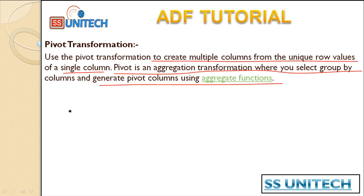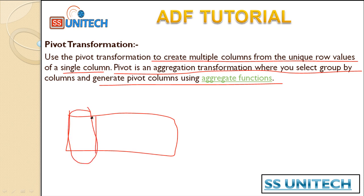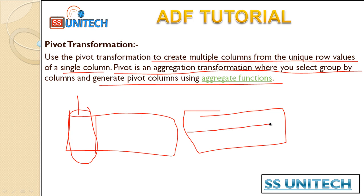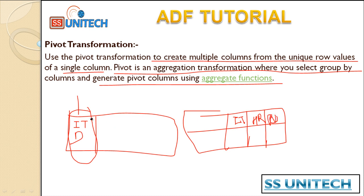Basically, we will have one input table with one column, and we'll do a rotation of that column's distinct values into new columns. For example, let's assume we have an employee table with a department column having IT, HR, and Payroll departments. By using the pivot transformation we can rotate these into different columns — IT department, HR department, and Payroll department — and we can also use aggregate values for any other column.